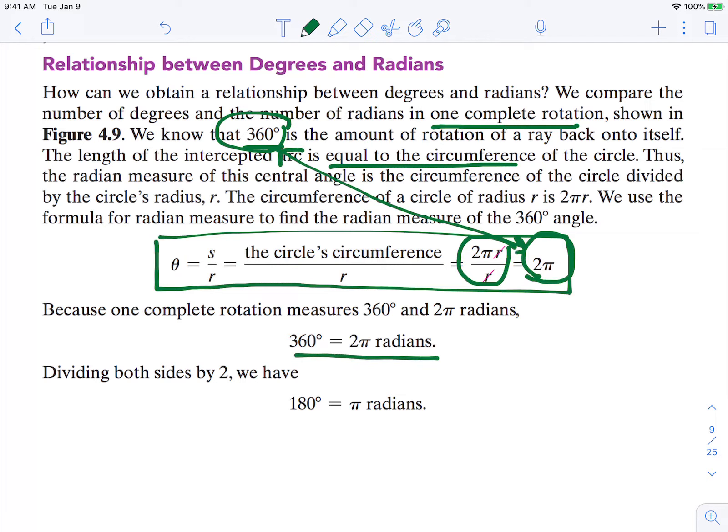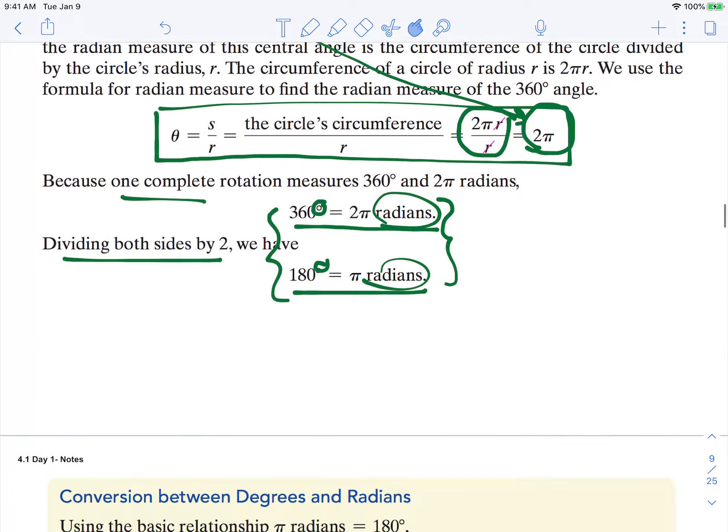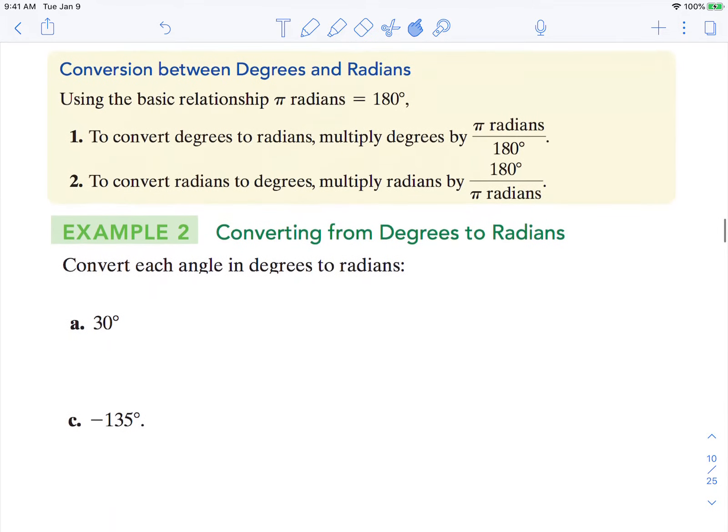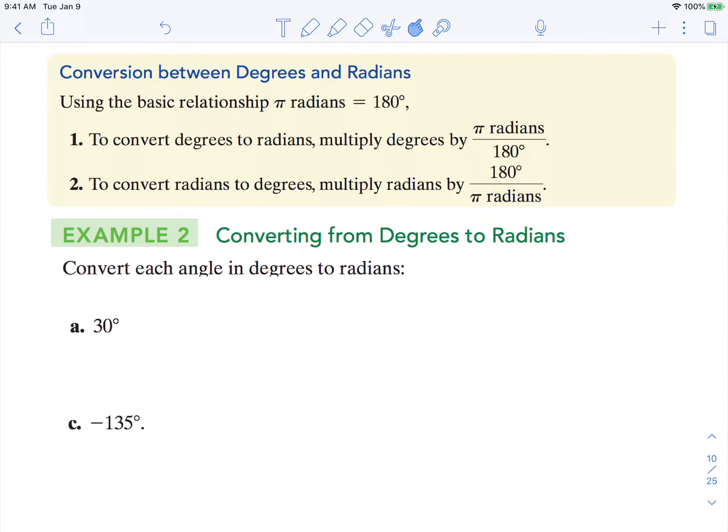360 degrees is 1 revolution or 2π radians. If we divide both by 2, we get these two angles to be equivalent. This side is our degree measure. This side is our radian measure. So we're going to be converting between the two forms. So we're going to work with these two ratios.